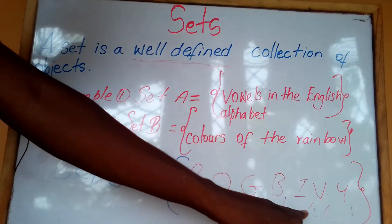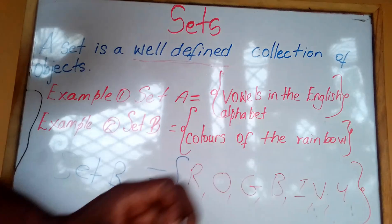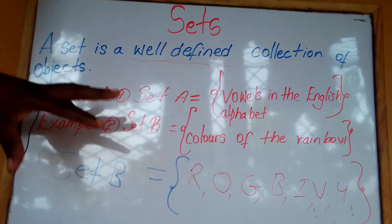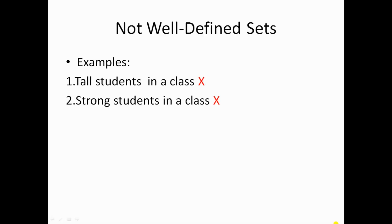So Set B equals {red, orange, green, blue, indigo, violet, yellow}. This is Set B and it is a well-defined set. Now let us look at some not well-defined sets. Example number one: tall students in our class. Is this a well-defined set? You could set a condition to make this a well-defined set by saying...